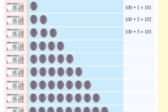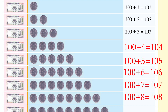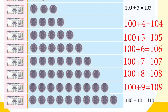Complete the table: 100 plus 1 is 101; 100 plus 2 is 102; 100 plus 3 is 103; 100 plus 4 is 104; 100 plus 5 is 105; 100 plus 6 is 106; 100 plus 7 is 107; 100 plus 8 is 108; 100 plus 9 is 109. Page number 9.